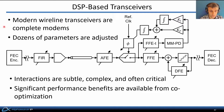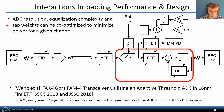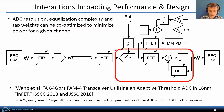Modern wireline transceivers are complete digital modems with dozens of parameters that need to be optimized and adjusted. The interactions between all these parameters are subtle, complex, and yet often critical. Significant performance benefits are available if you're able to properly co-optimize these. ADC resolution, equalization complexity in the receiver, and the equalizer tap weights can all be co-optimized to minimize power for a given channel, as shown in this publication, where a greedy search algorithm is used to dynamically select the correct number of bits required in the A-to-D.